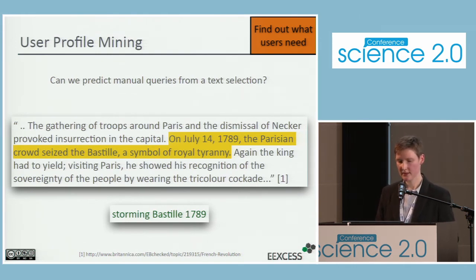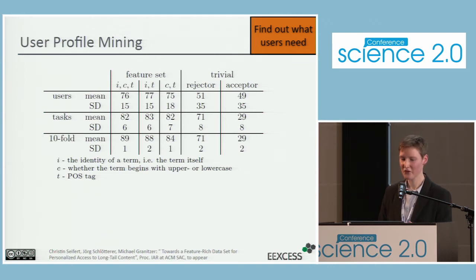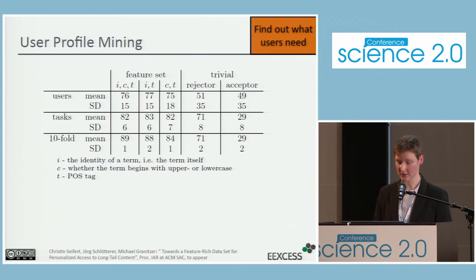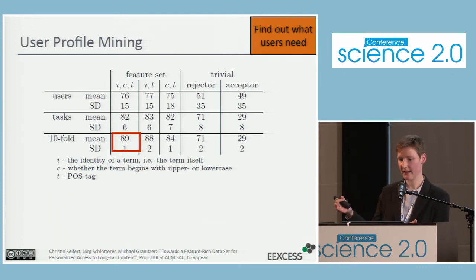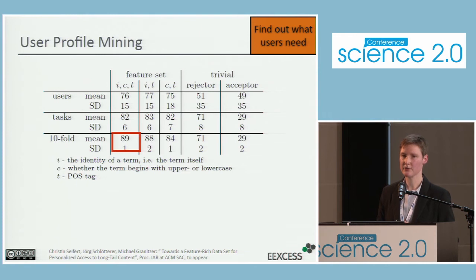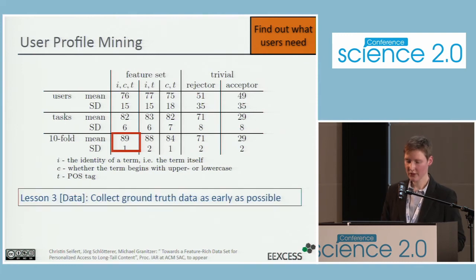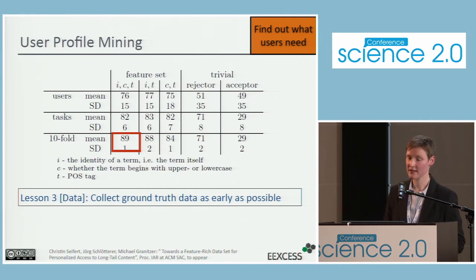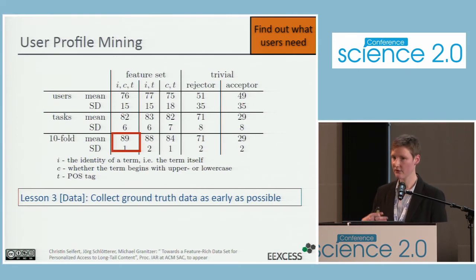We used this dataset to train a conditional random field. The most interesting result: we can predict a good user query — one where users retrieved good results — from a text selection with approximately 90% accuracy. What we learned from this experiment is that it is important to collect ground truth data as early as possible, especially if there is no existing dataset available to train our methods.